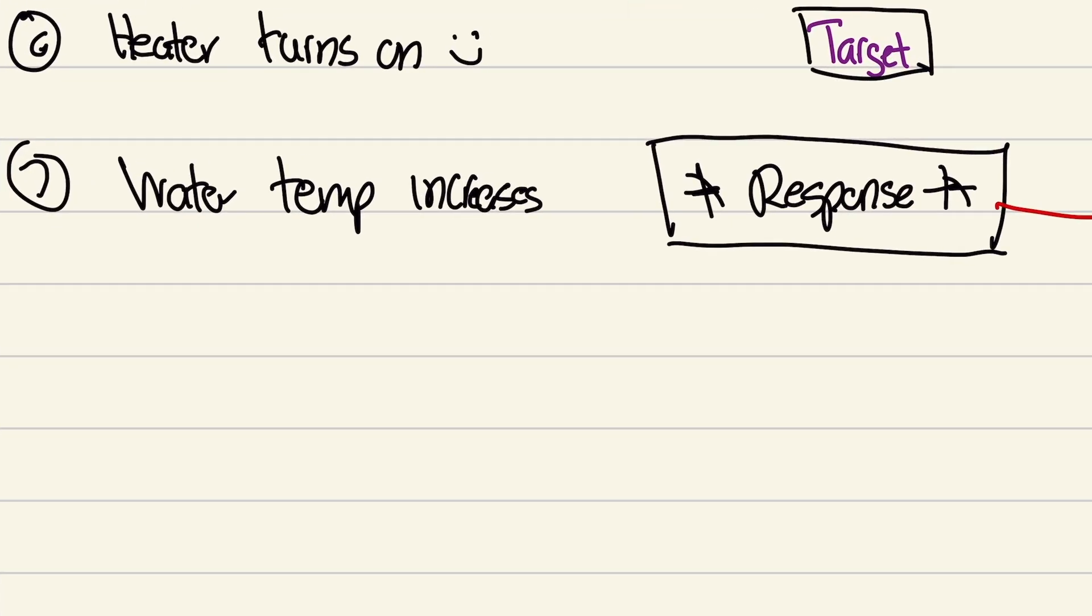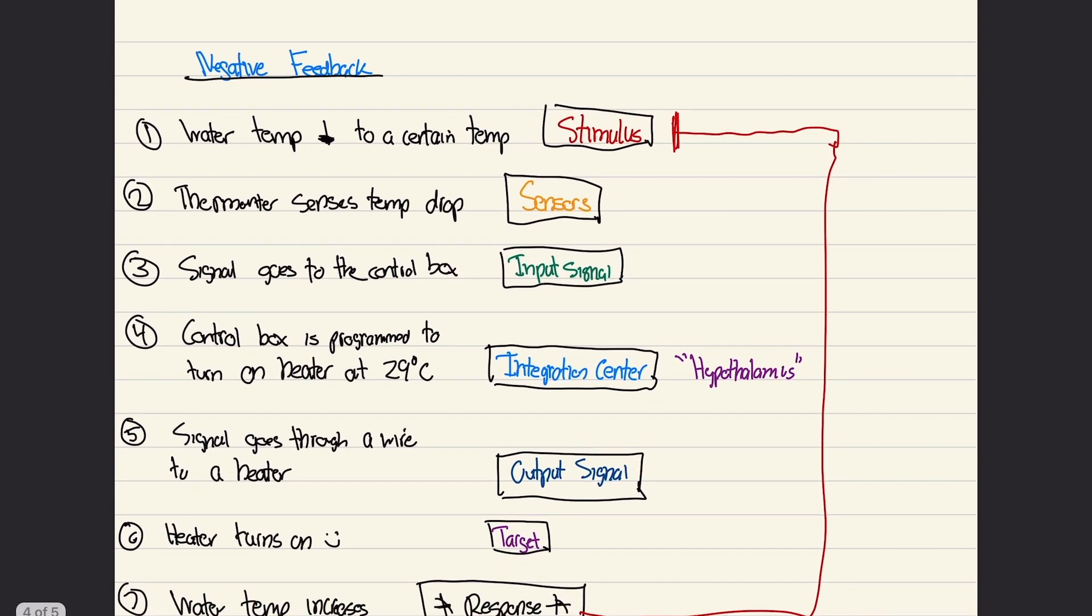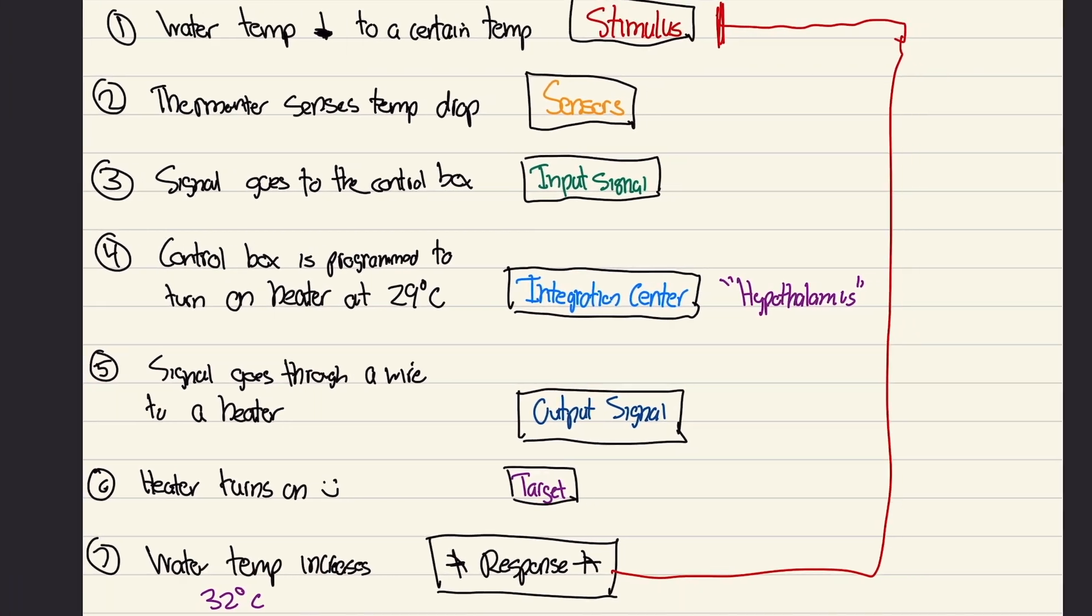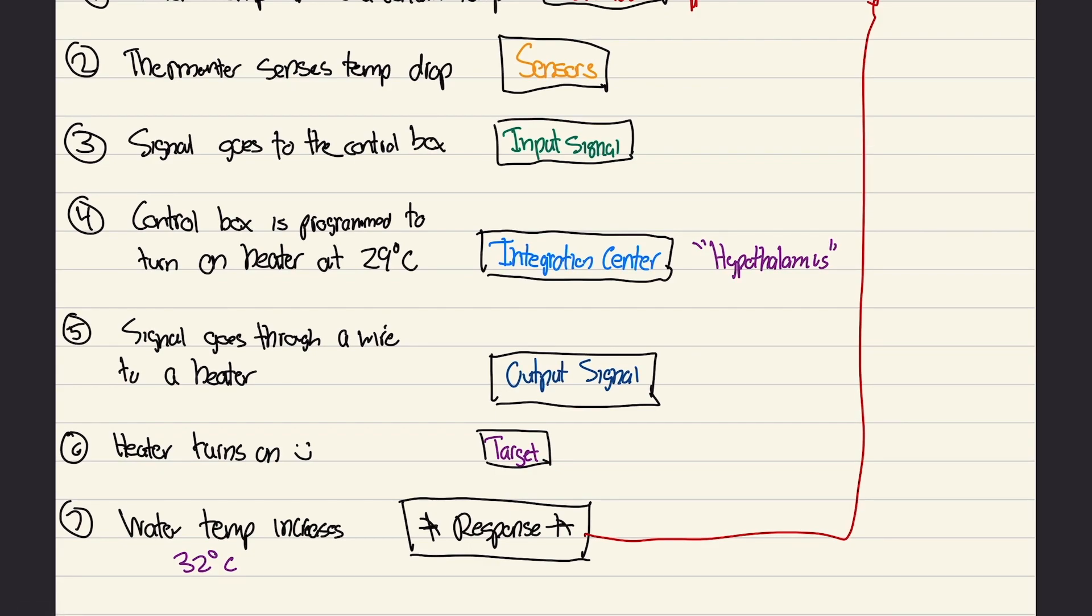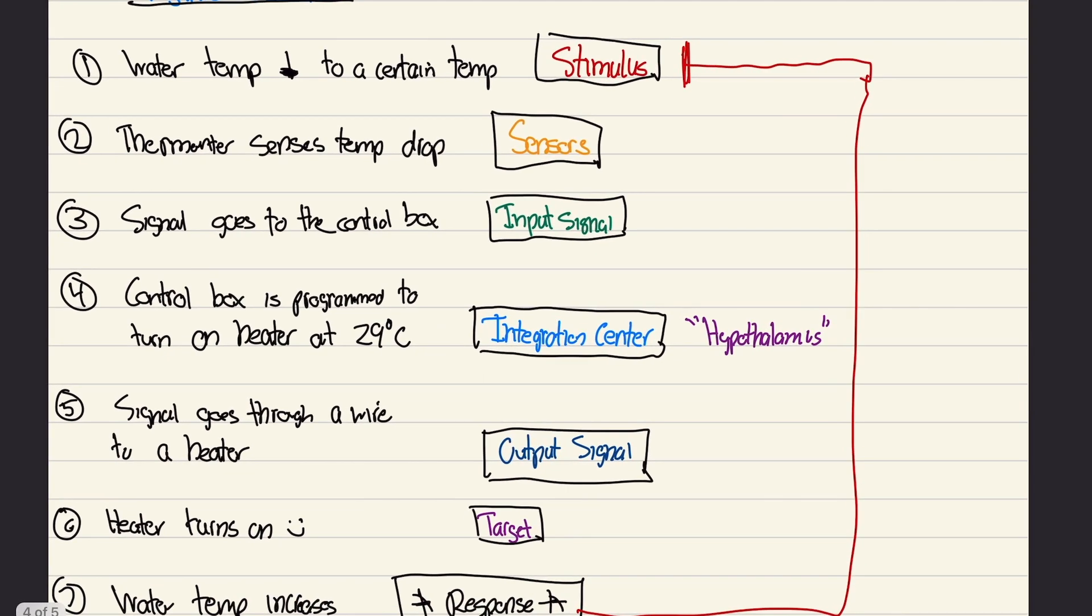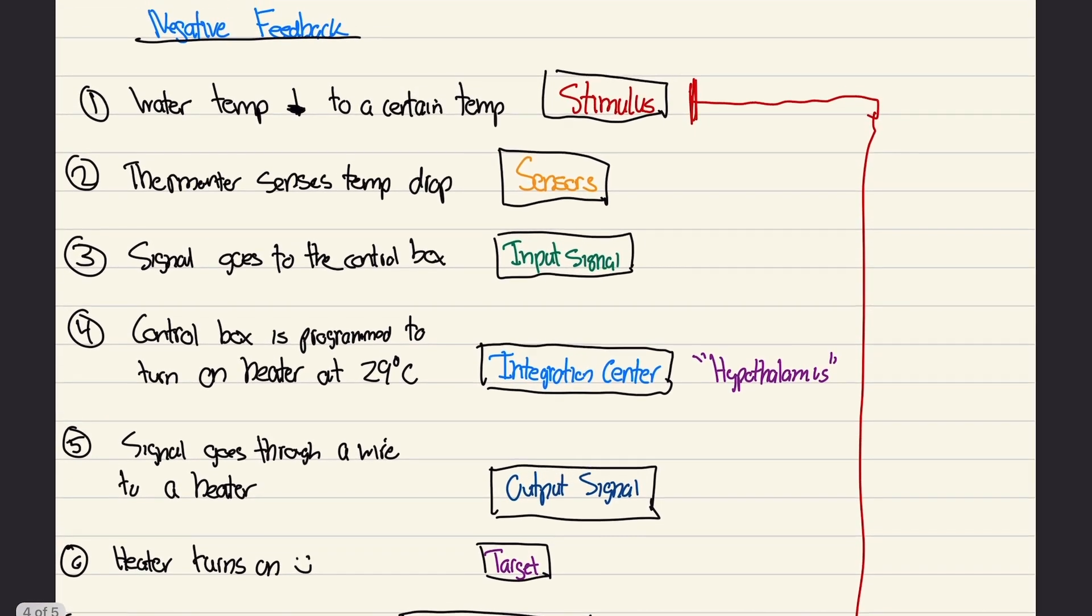Say the water temperature is now, for example, 32 degrees Celsius. It's no longer 29 degrees. So the heater is not going to turn on. It has to be 29 degrees or lower, for example.